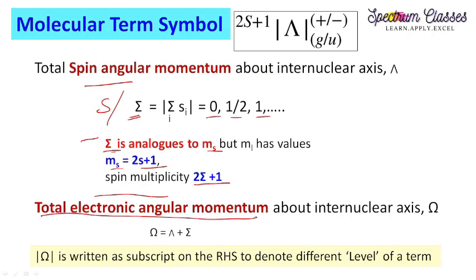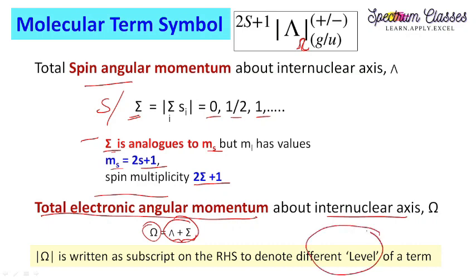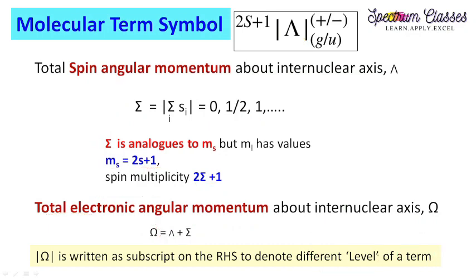This 2S+1 is the multiplicity of the state or term. Now we are going to discuss the total electronic angular momentum about the internuclear axis, represented by uppercase omega. This is the sum of the projections of orbital angular momentum and spin angular momentum on the internuclear axis, equal to lambda plus sigma. This is written as the right-hand-side subscript, and it designates or represents the different levels of the term.